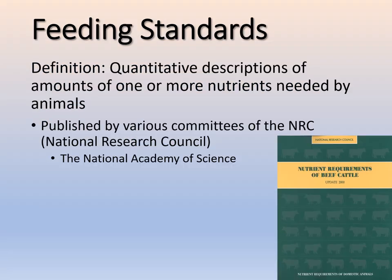The definition of feeding standards is essentially a quantitative description — how much of one or more nutrients is actually needed by the animal. These are published by various committees of the National Research Council, which is under the National Academy of Science. The NRC publishes these books and updates them every few years. You can find them for most animals, though exotic species can be a little different — definitely for our domestic and production animals.